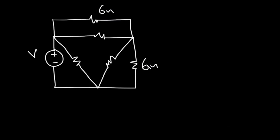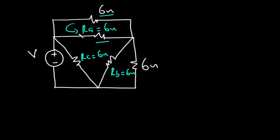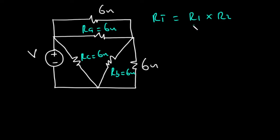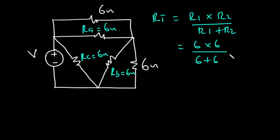After converting from star to delta, we have RA = 6 ohms, RB = 6 ohms, and RC = 6 ohms. Now certain pairs of resistors are connected in parallel — we can go through their loops without passing through any other circuit element. The equivalent resistance for two resistors in parallel is RT = (R1 × R2) / (R1 + R2). So RT = (6 × 6) / (6 + 6) = 36 / 12 = 3 ohms.